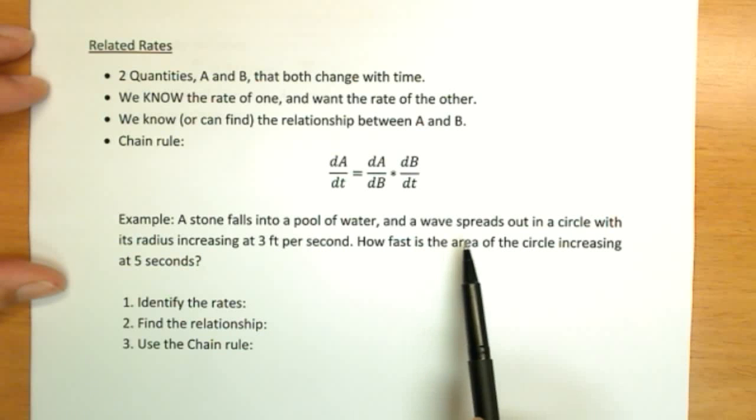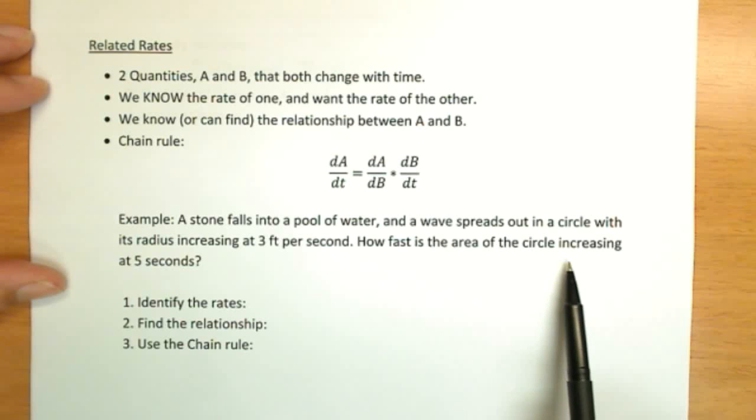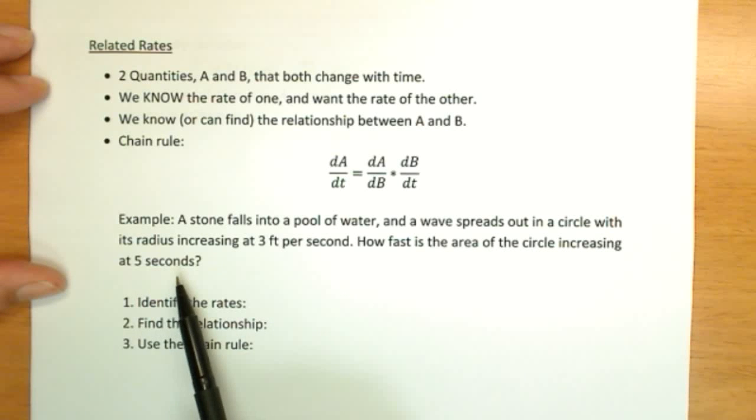Stone falls in a pool of water and a wave spreads out in a circle. Its radius is increasing 3 feet per second. How fast is the area of the circle increasing at 5 seconds?